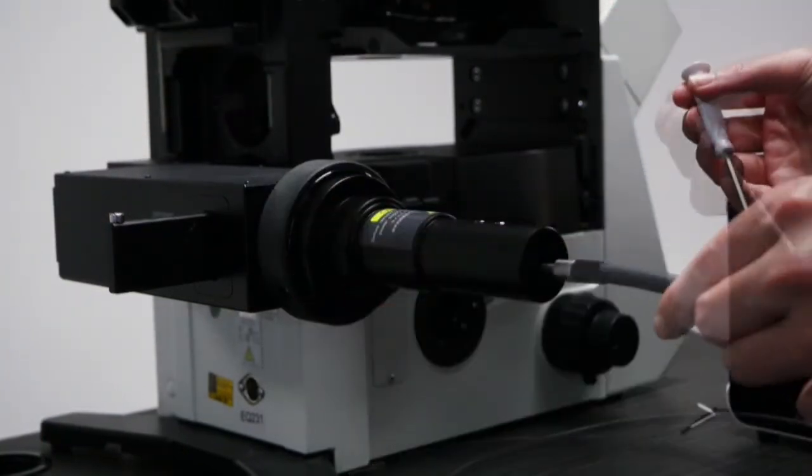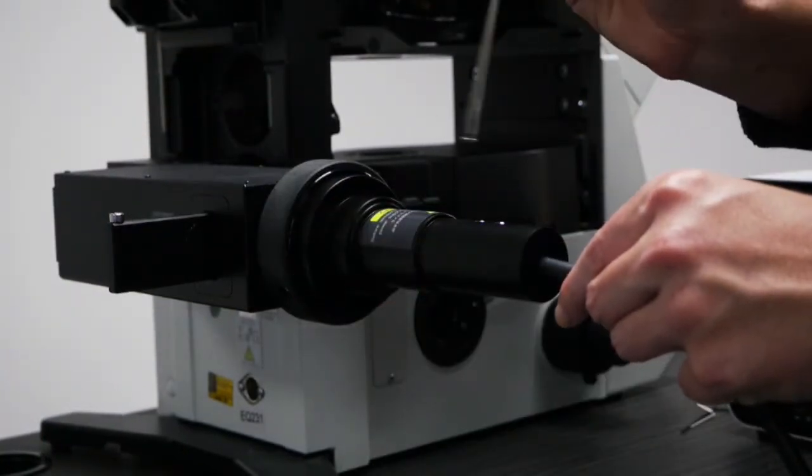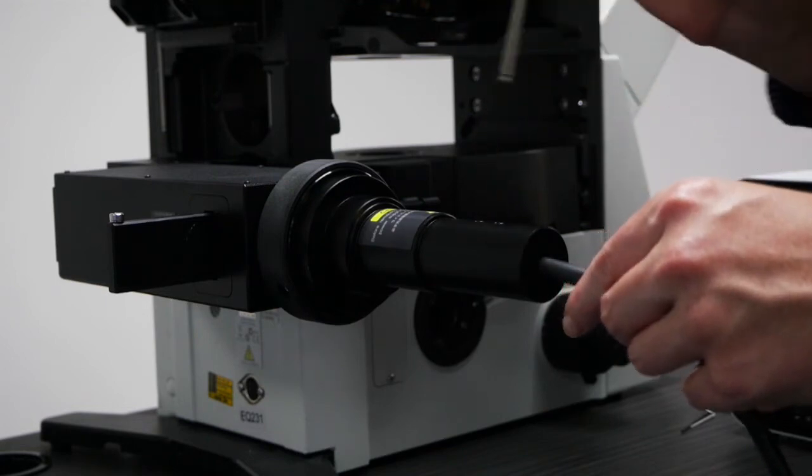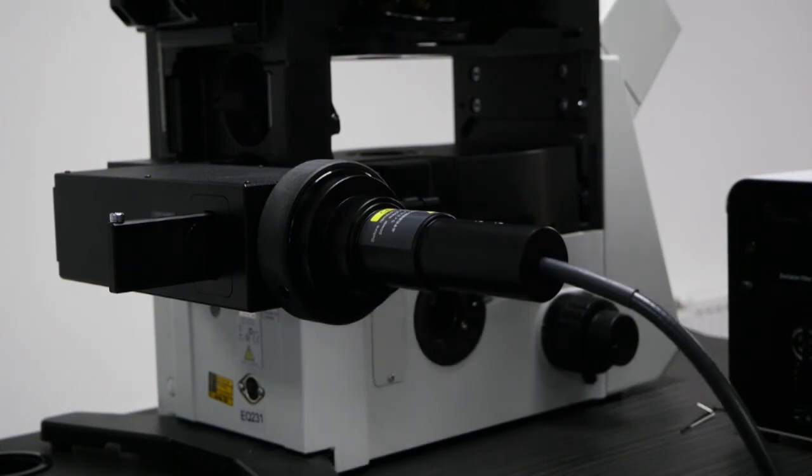You then attach the liquid light guide and once more secure this using the two grub screws.